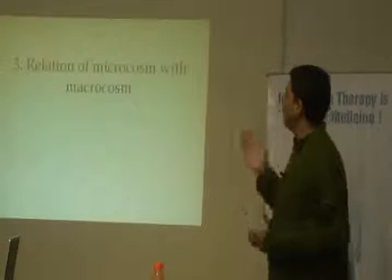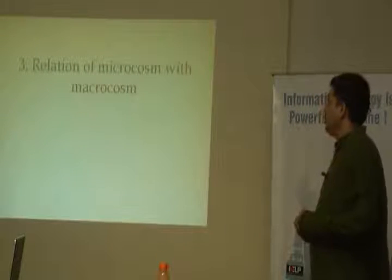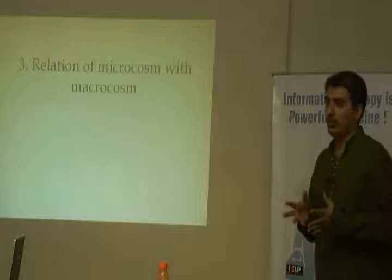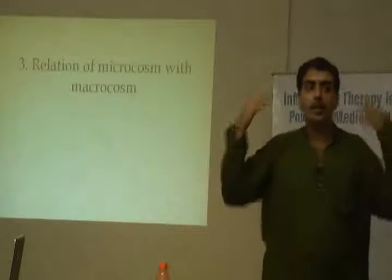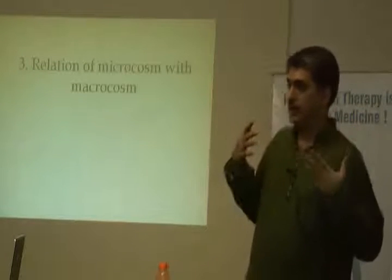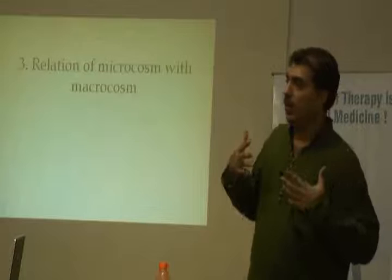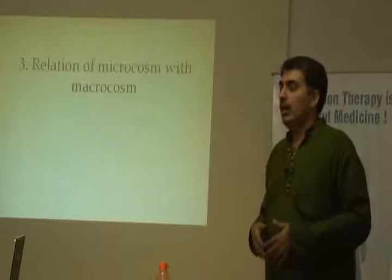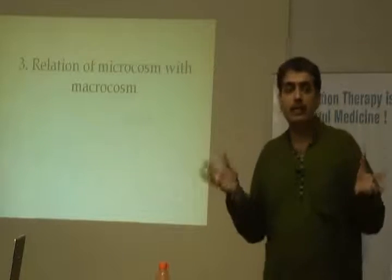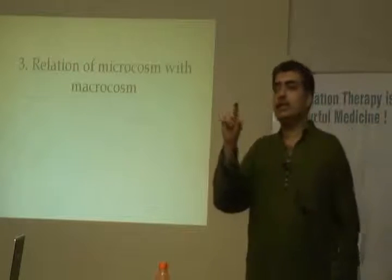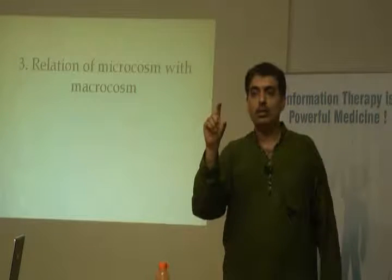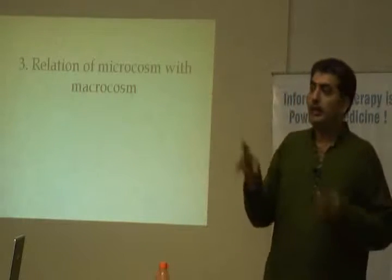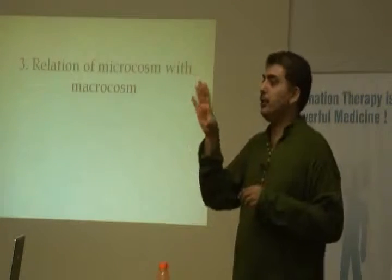We now go to the third most important point: the relation of microcosm with the macrocosm. Microcosm generally refers to this body, and macrocosm is the entire universe. Albert Einstein said that a human being is just a part of the whole which we call the universe, and this part is restricted as such.